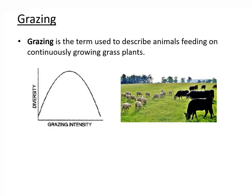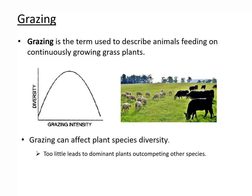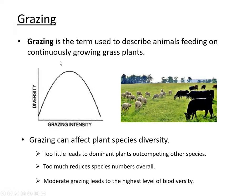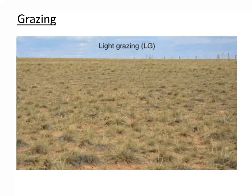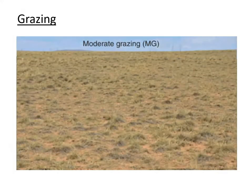Another relationship we're looking at is grazing. Grazing is a term used to describe animals feeding on continuously growing grass plants, and this can affect plant species diversity. Too little grazing results in dominant plants out-competing other species. Too much grazing reduces species numbers overall — this is overgrazing. Moderate grazing leads to a high level of biodiversity. I have some pictures to show this: an enclosure with zero grazing, light grazing, moderate grazing, and then heavy grazing.